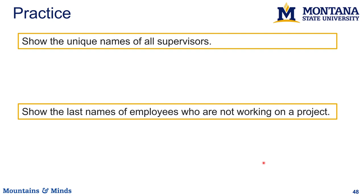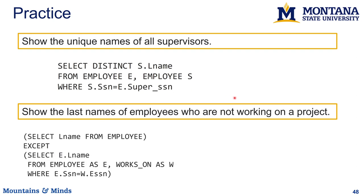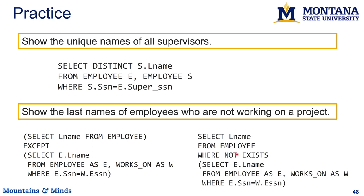This allows tricks like showing unique names of all supervisors, or the last names of employees who are not working on a project. You can use EXCEPT or a nested clause: SELECT last_name FROM employee EXCEPT SELECT last_name FROM employees that work on some project. Or use: SELECT last_name FROM employee WHERE NOT EXISTS a matching row in works_on.